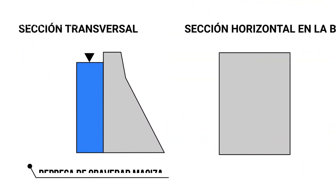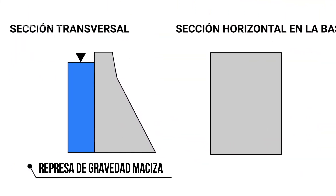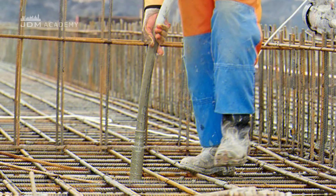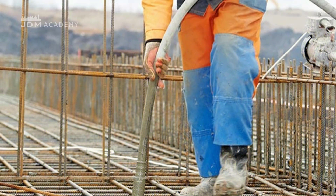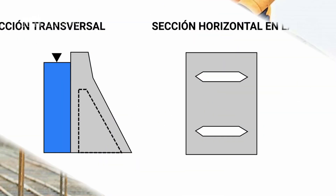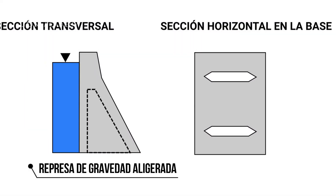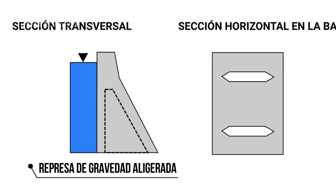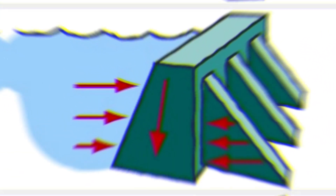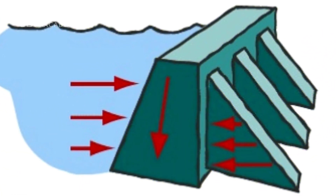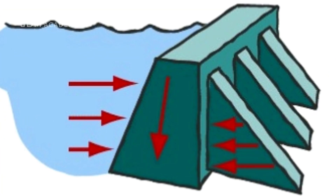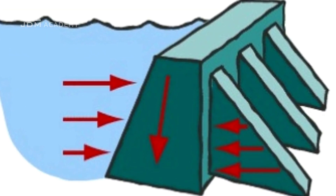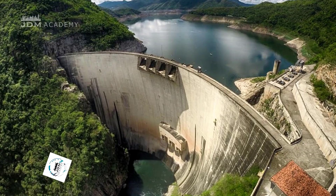Macizas (Solid gravity dams) have a triangular or trapezoidal profile and can be of vibrated or compacted concrete. Aligeradas (Lightened gravity dams) distribute the concrete mass to achieve a greater moment of inertia in the horizontal section and can be of buttress or flat-slab type.